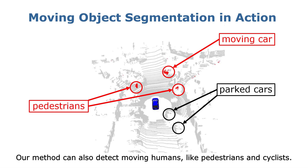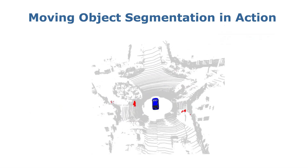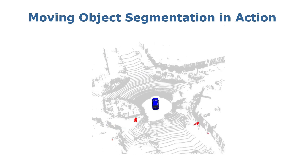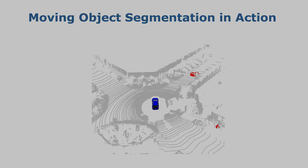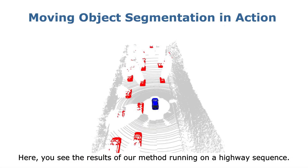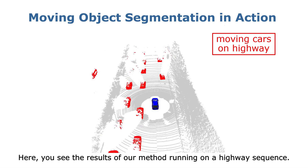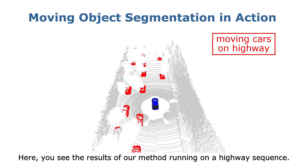Our method can also detect moving humans like pedestrians and cyclists. Here you can see the result of our method running on the highway sequence.